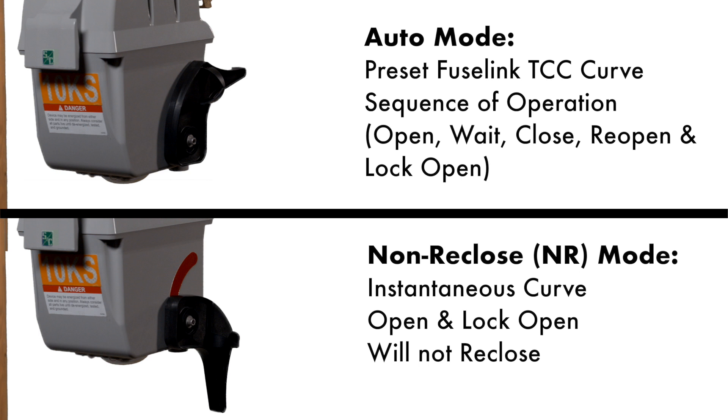In the auto mode, the VacuFuse Interrupter will respond to fault current according to its preset fuse link TCC curve. The interrupter will behave according to the standard sequence of operation. It will open, wait a preset number of seconds, close once, and if the fault is still on the line, will reopen and lock open. If another fault occurs during its sequence reset time, the interrupter will immediately open and lock open. The VacuFuse self-resetting interrupter will not drop out of the mounting and will remain upright in the cutout mounting.